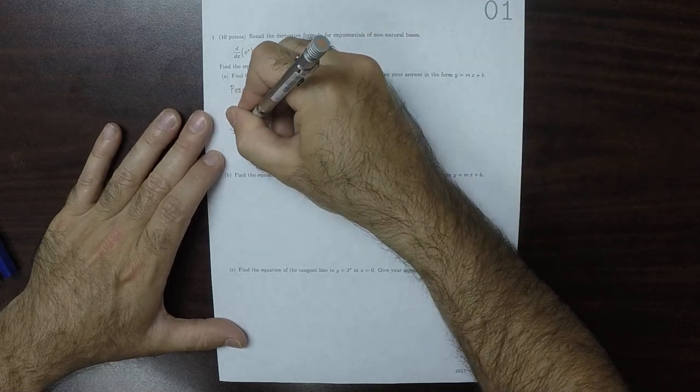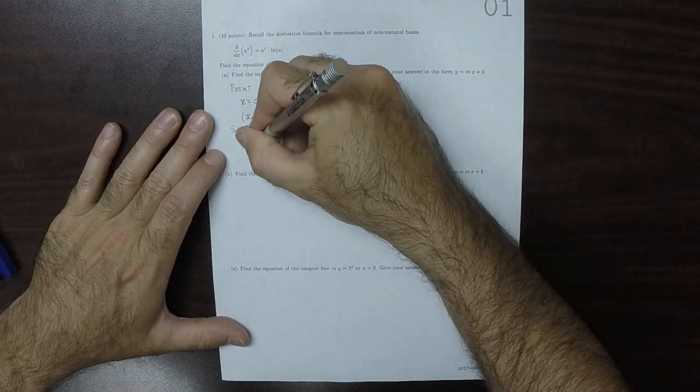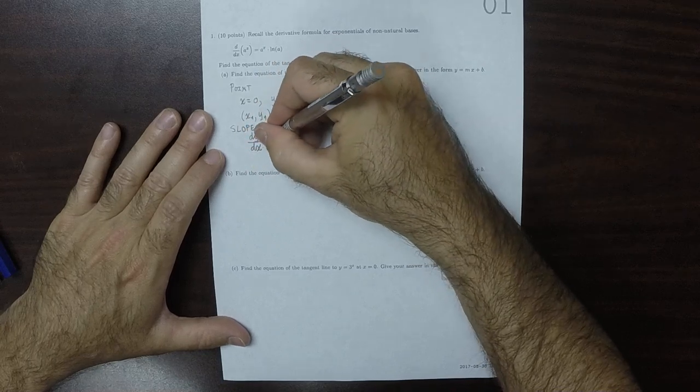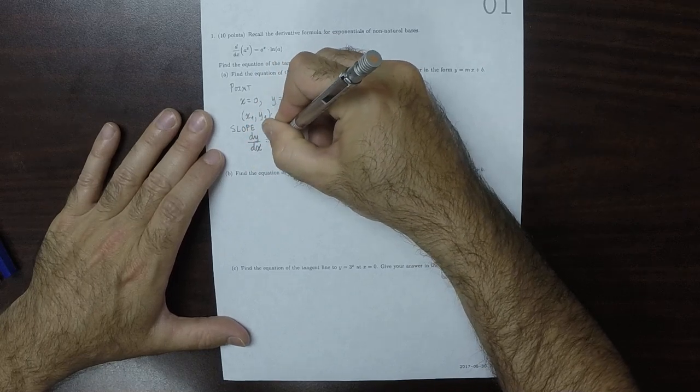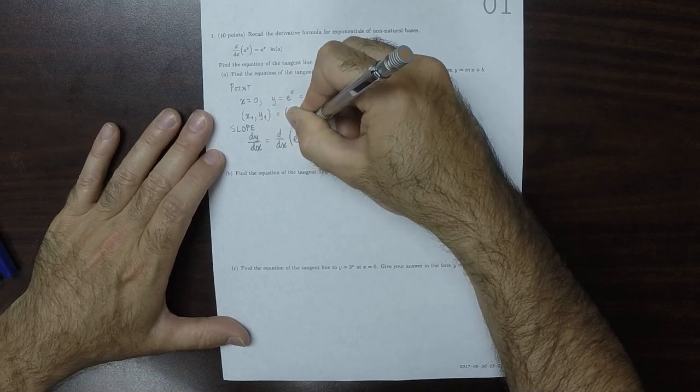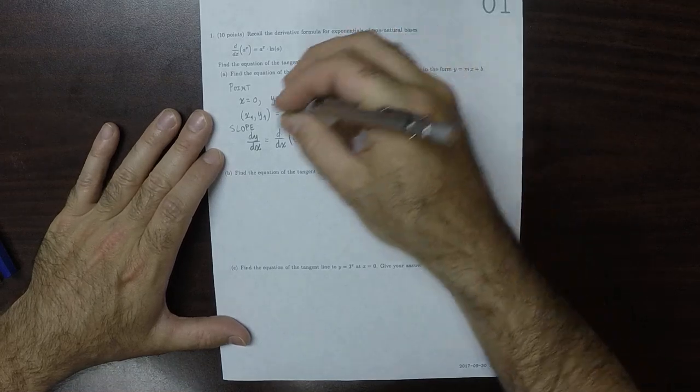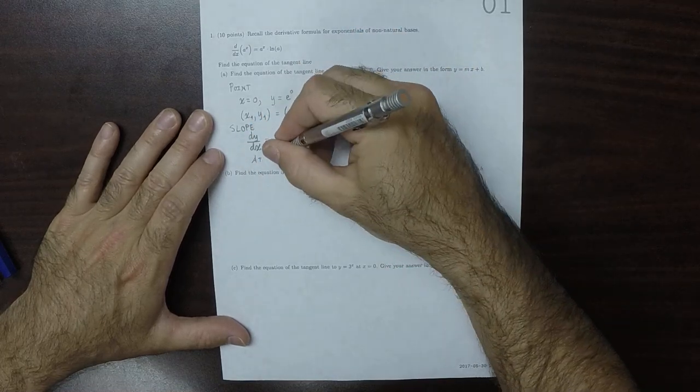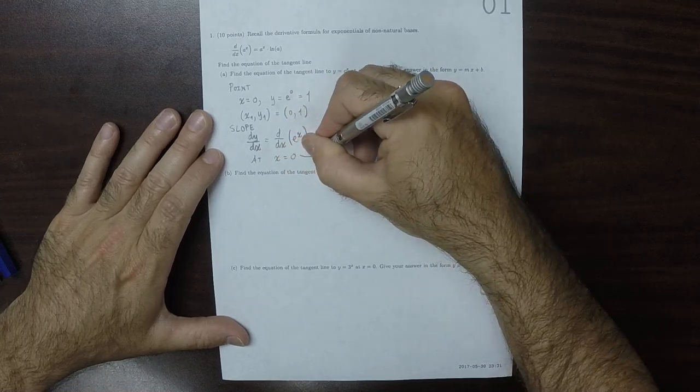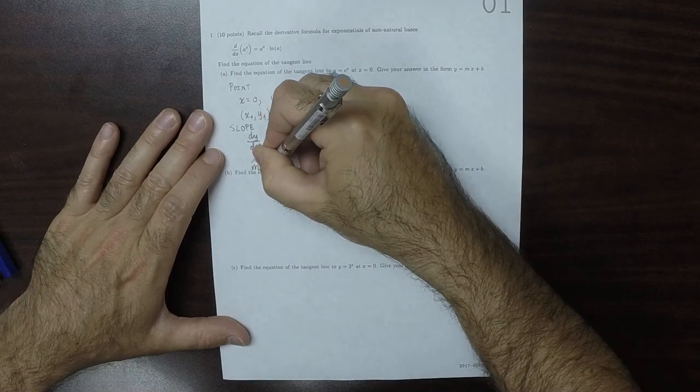The slope will be the derivative evaluated at x is 0. So dy dx is the derivative of e to x. The derivative of e to x is e to x. And then we evaluate this at x is equal to 0. It tells us that the slope, m, is equal to 1.